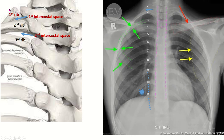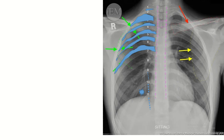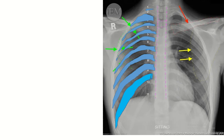Continuing the count: 6th, 7th, 8th, 9th, 10th, 11th. This is the first rib with the costo-transverse joint visible; the costo-vertebral joint is not seen in this picture. This is the narrowest first intercostal space, then the second, third, fourth, fifth, sixth, seventh, eighth, ninth, tenth, and eleventh intercostal spaces on this posterior-anterior chest X-ray.